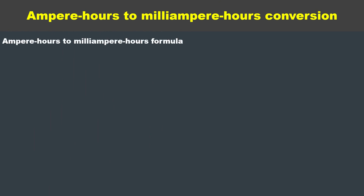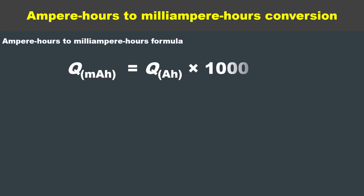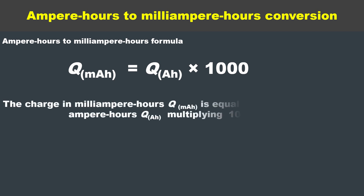The formula for ampere hours to milliampere hours is: milliampere hours is equal to ampere hours multiplied by 1000. The charge in milliampere hours equals the charge in ampere hours multiplied by 1000.